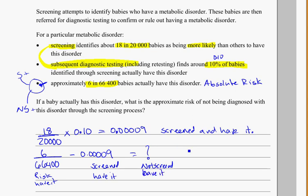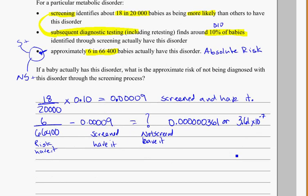If we do that subtraction — 6 over 66,400 minus 0.00009 — the number we get has a lot of zeros. You might also see this on your calculator written in exponential form: 3.61 times 10 to the negative 7. That's the probability of those who have not been screened and have it, but it's not our total probability yet.